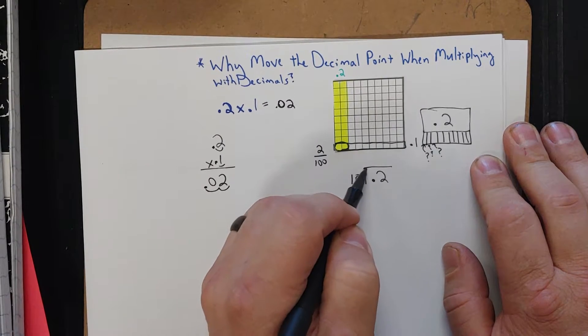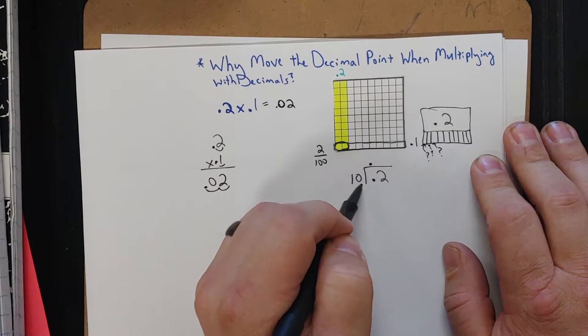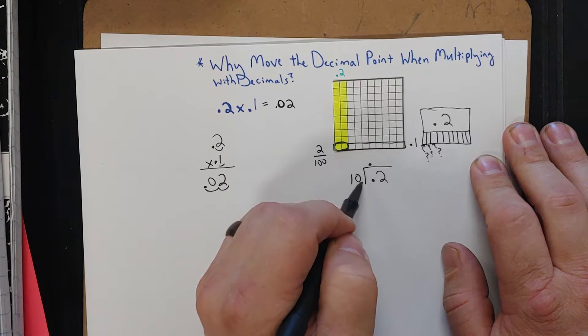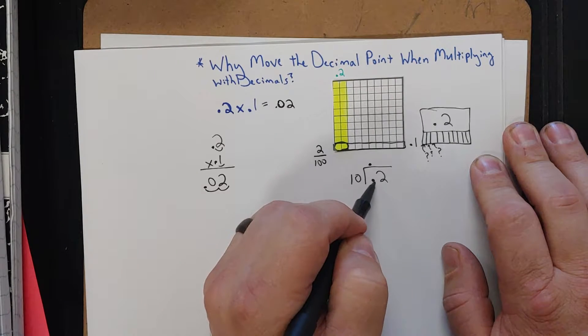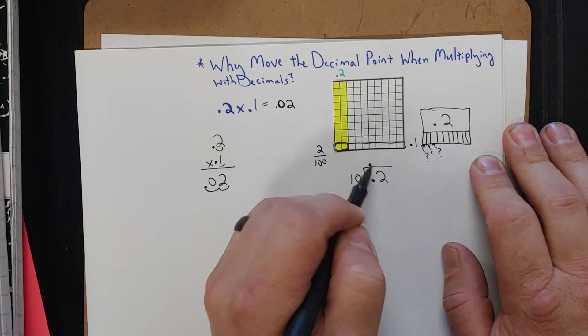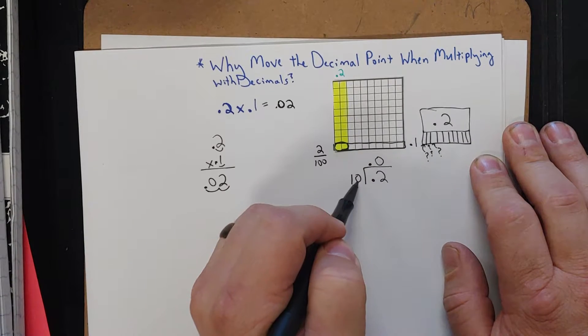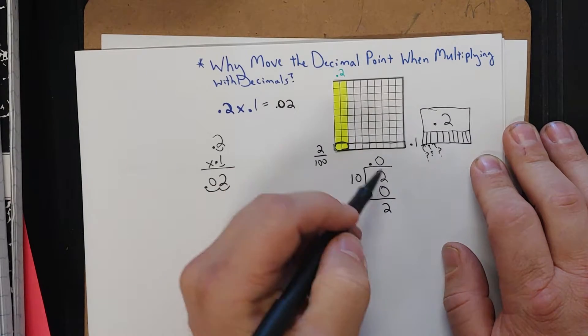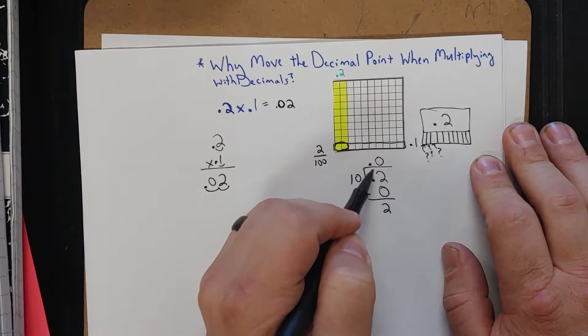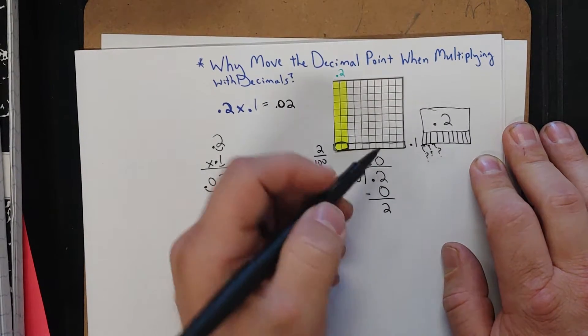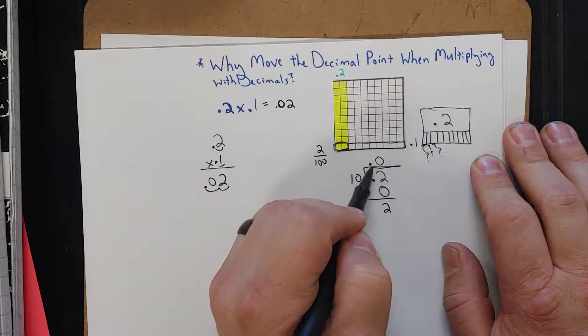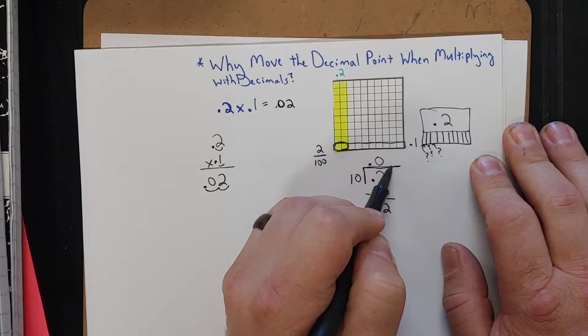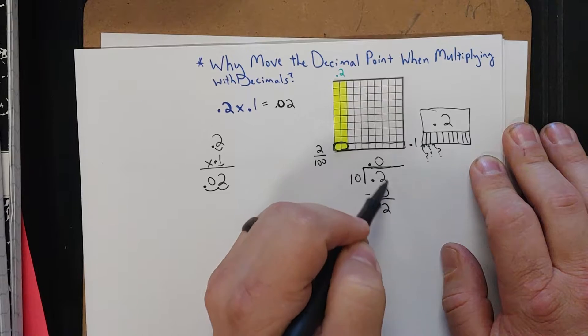So what I could do is think about it like this: 10 going into 2. Well, remember that's not 2, it's 2 tenths. So how many tenths would that be? 10 times what can get you close to 2 tenths? Well, it wouldn't work. So let's try 0. 10 times 0 is 0, subtract 2. And what did that do? Well, it showed us that we can't take any tenths groups out. So we would have to do hundredths now.